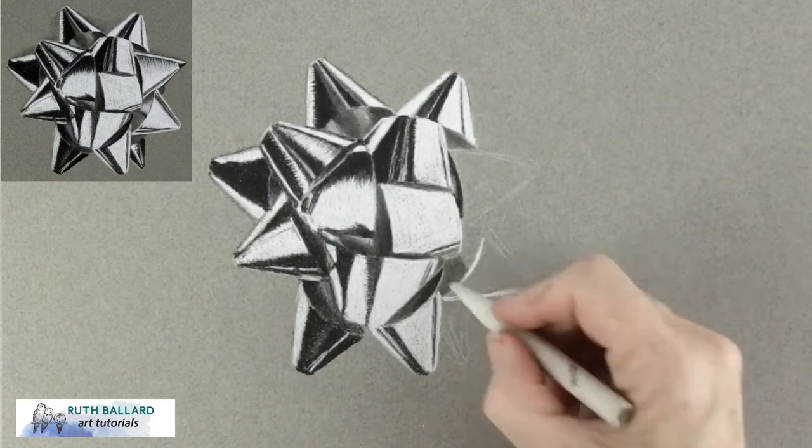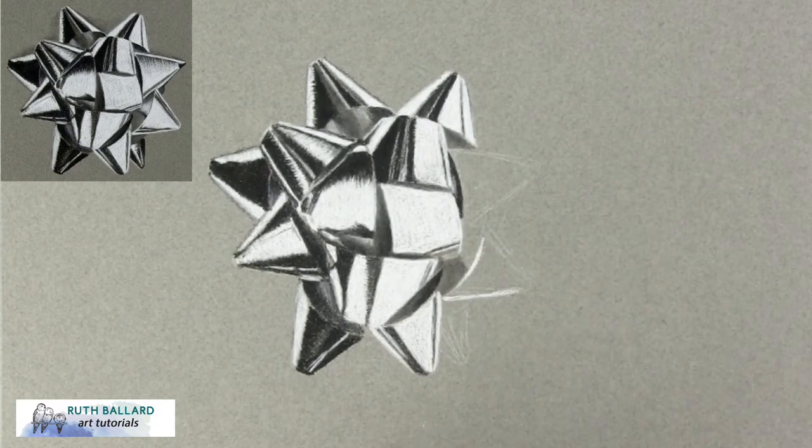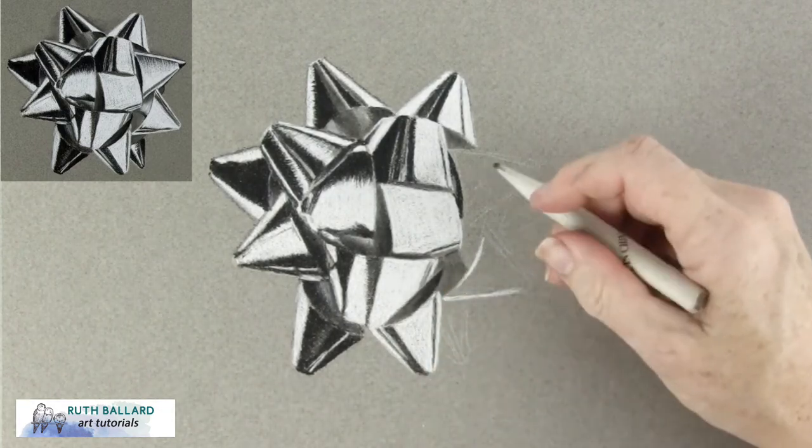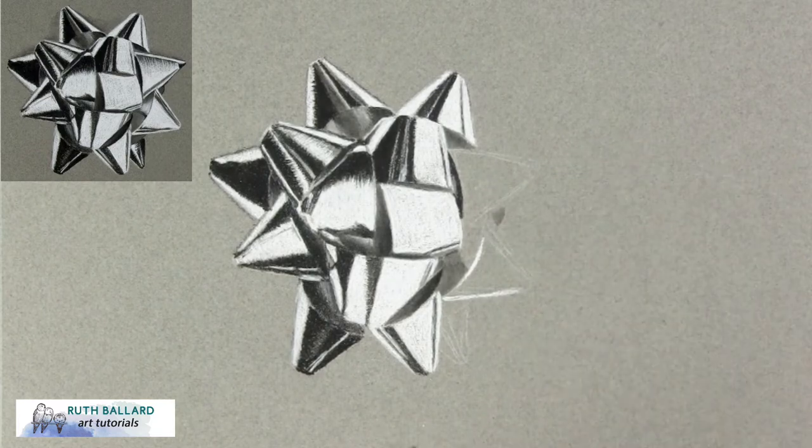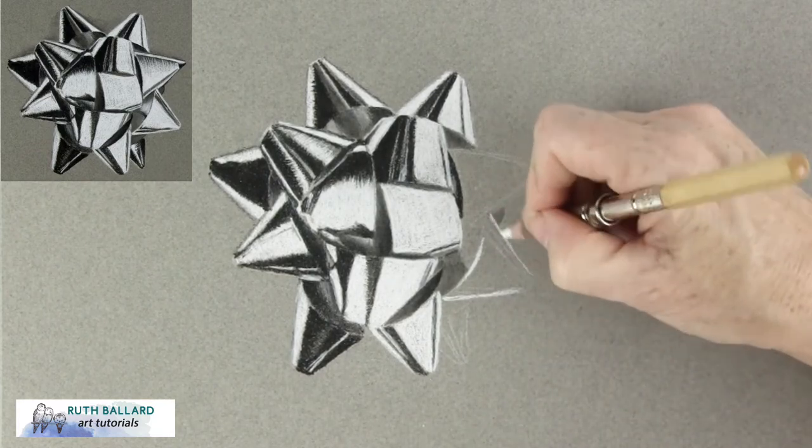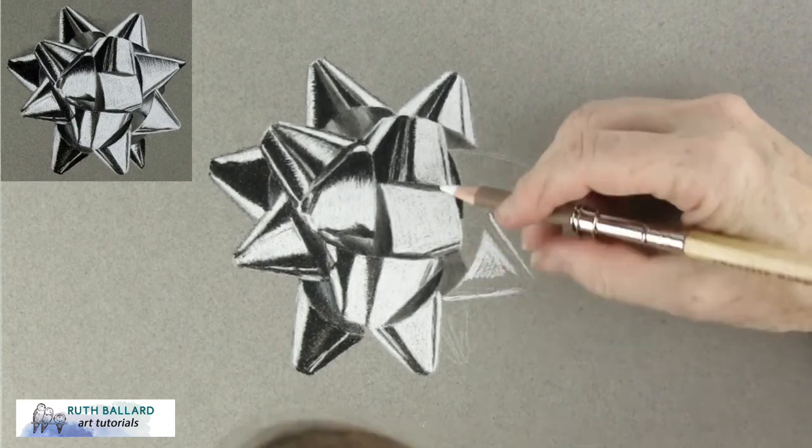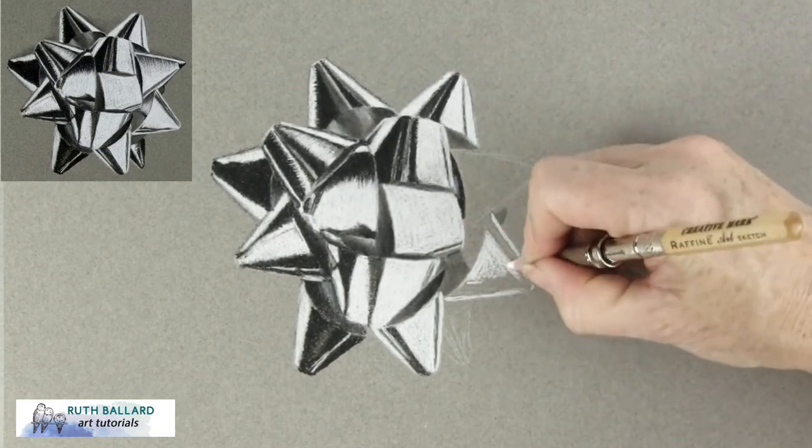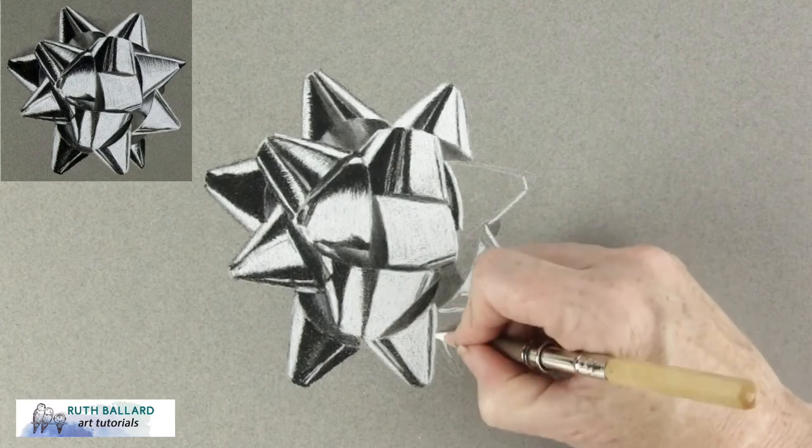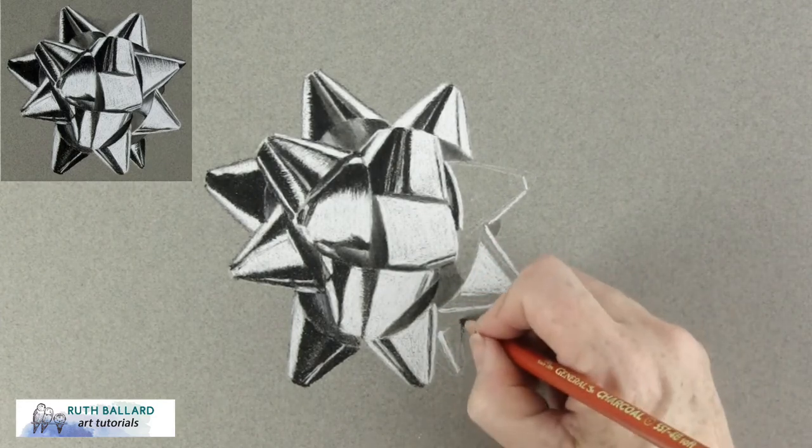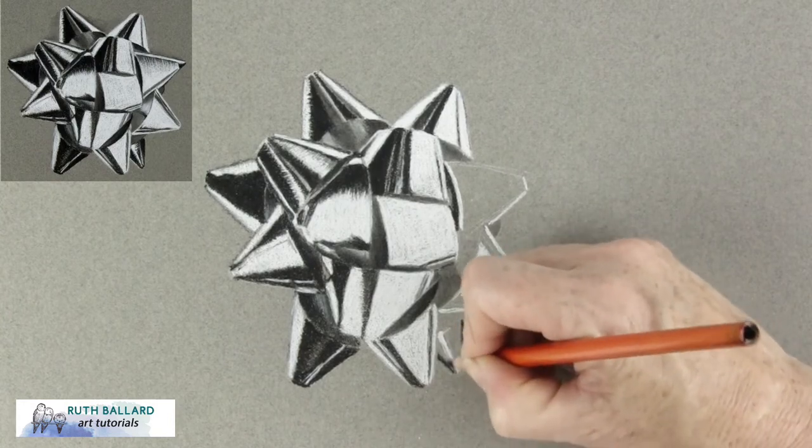The blending stumps are great as they have sharp points so they can get into all the corners and edges of the bow and they're also useful for picking up pigment and moving it around without adding any more. By paying close attention to your reference you'll automatically add this light in and have a more realistic drawing but it's always useful to pay attention to where the light is coming from.